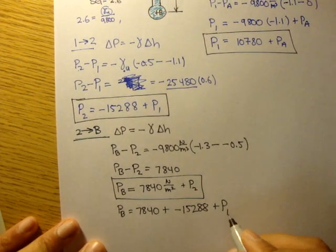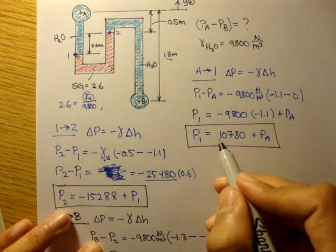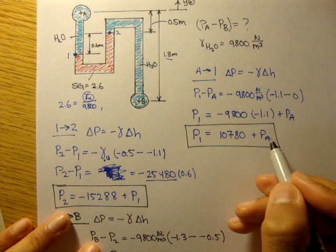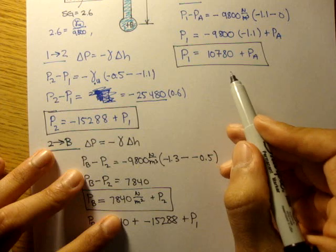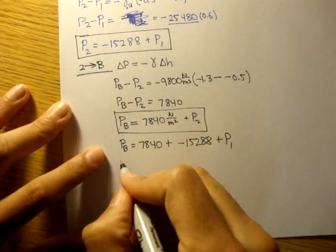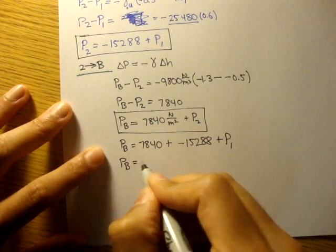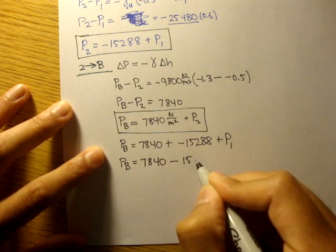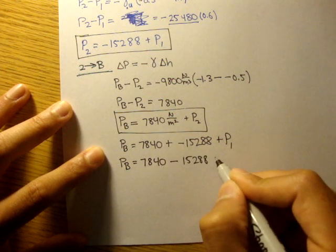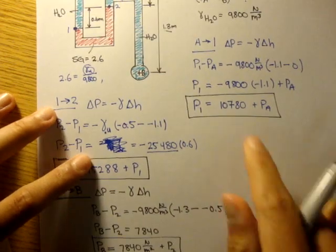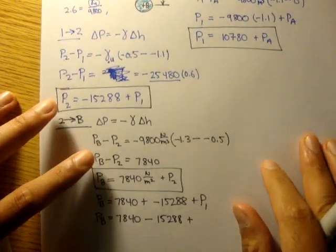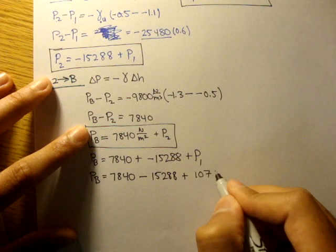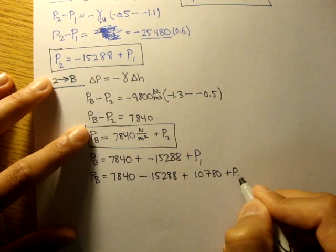What's P_1? Well, up here it's 10,780 plus P_A. So we'll substitute that into P_1. We'll get P_B is equal to 7840 minus 15,288 plus pressure at 1, which is this. So plus 10,780 plus P_A.